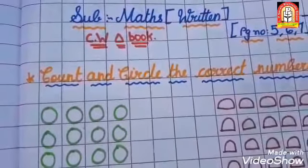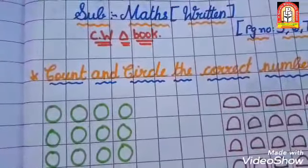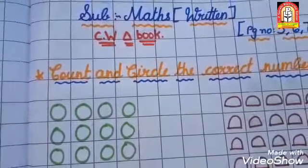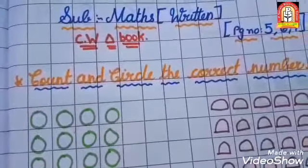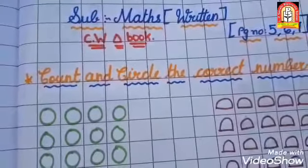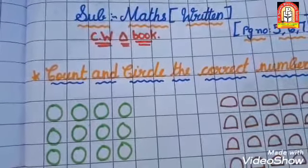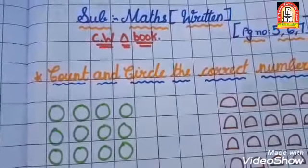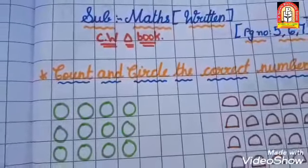Today we are going to learn Maths. Classwork, page number 567. So open your one triangle book, Maths. And take your pencil and eraser.